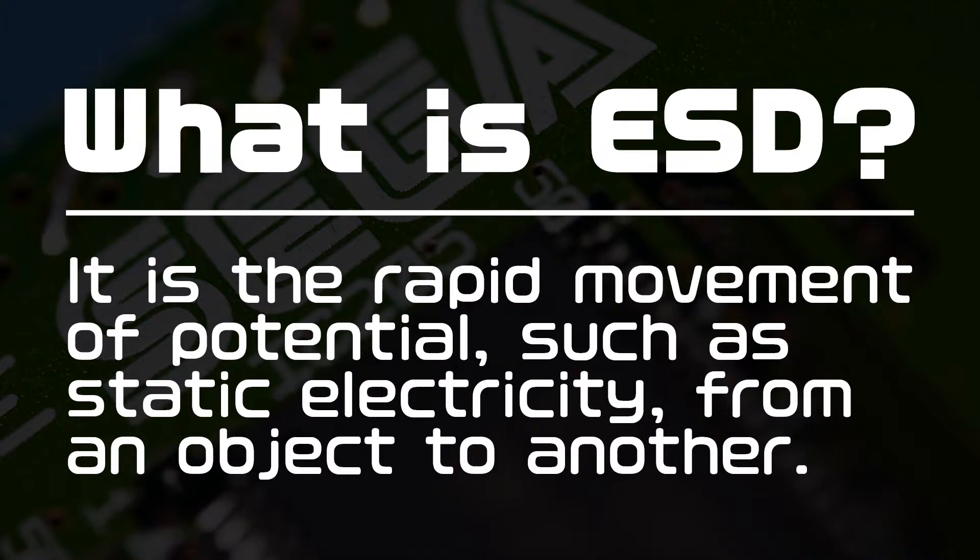So what is ESD? ESD is the rapid movement of potential, such as static electricity, from one object to another. It's an acronym for electrostatic discharge. In layman's terms, it's the transfer of static electricity from one source with more static to another with less, so both sources even out with the same amount of static electricity.